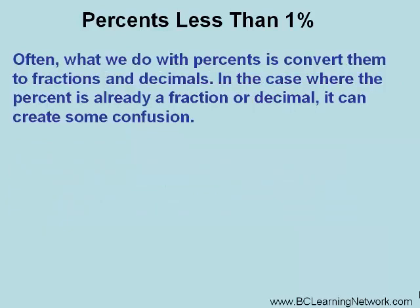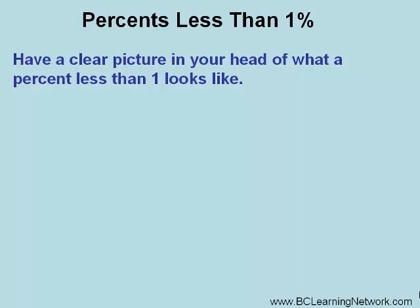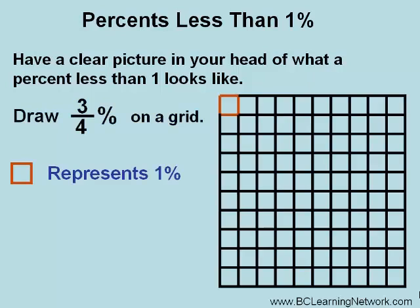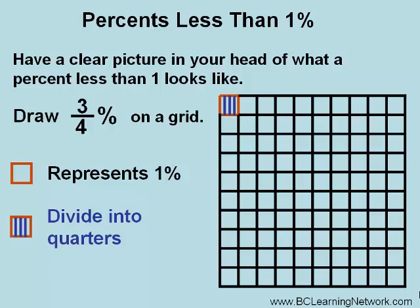Often what we do with percents is convert them to fractions and decimals. In the case where the percent is already a fraction or decimal, it can create some confusion. So it is very important to have a clear picture in your head of what a percent less than one looks like. Let's draw three quarters of a percent on a grid. One square represents one out of one hundred, or one percent. So we'll take that one little square and divide it into quarters, then shade in three of the quarters, representing three quarters of a percent — so it's smaller than one out of a hundred.